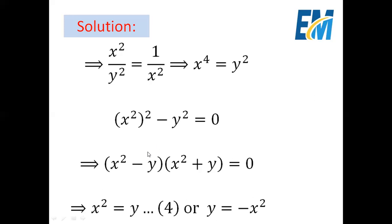Since the product equals zero, either the first factor or the second factor is zero. Then x squared minus y equals zero, giving x squared equals y — this is the fourth equation. Or x squared plus y equals zero, giving y equals negative x squared.